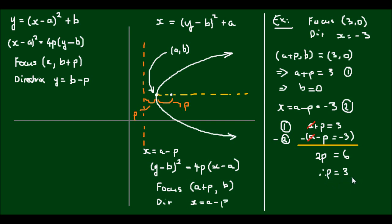And if p equals 3, that means a equals 0. So this tells me that if I were to put this equation into the conic form, I have (y - 0)² equals 4 times 3 times (x - 0). And my equation simply is going to be y² equals 12x.